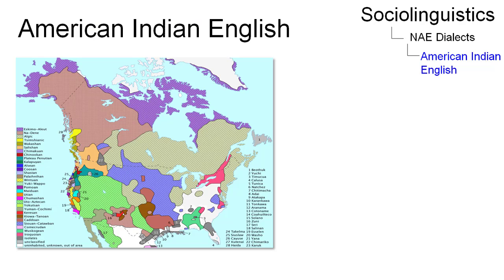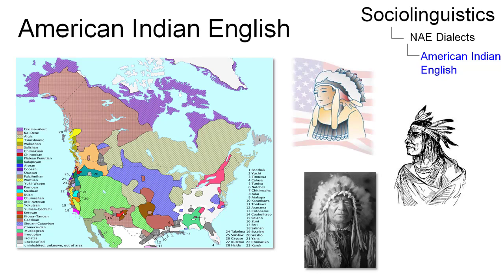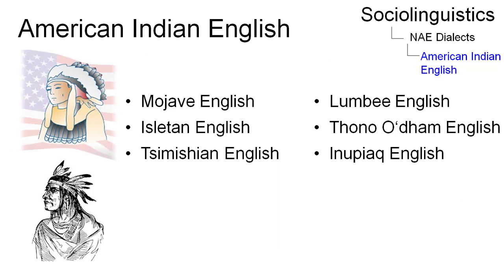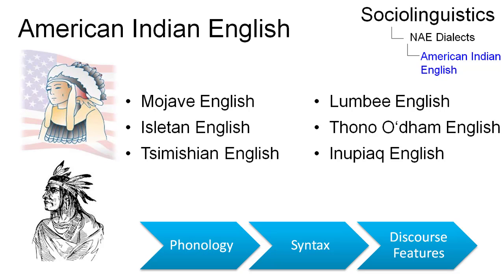The term American Indian English refers to a number of varieties of English that are spoken by indigenous communities throughout North America. These examples demonstrate the diversity of English in American Indian speech communities, each with its unique phonology, syntax, and discourse features.